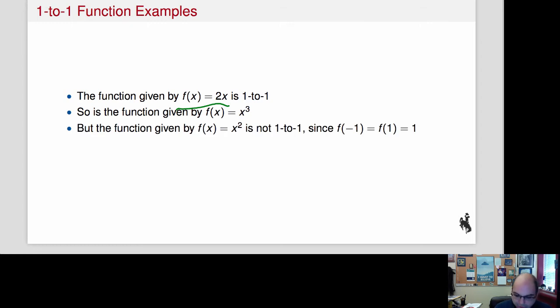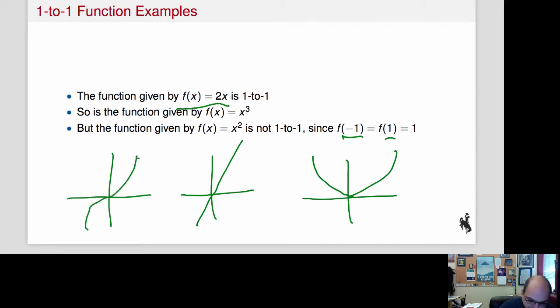On the other hand, x squared is not one-to-one, because I have here two numbers, minus 1 and 1, that f maps both of those to 1. So I want to show you this kind of picture, because we have here x squared, we have here 2x, and we have here x cubed, roughly speaking.